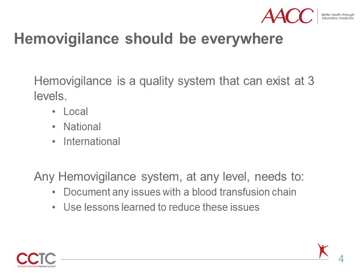Hemovigilance is an important part of a quality management system in health care. It exists at three levels: one, the blood collector and hospital; two, regional or national levels; and three, international levels. At all three levels, the system is structured to observe, record, report, and analyze anything that goes wrong in the blood transfusion chain. Perhaps more importantly, the system is only effective when it can use the lessons learned to take action to avoid future problems.